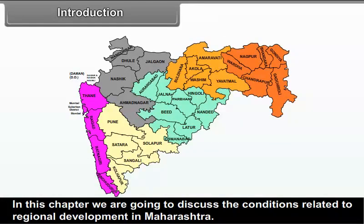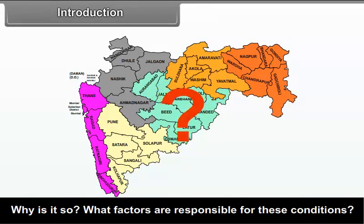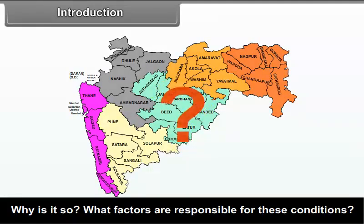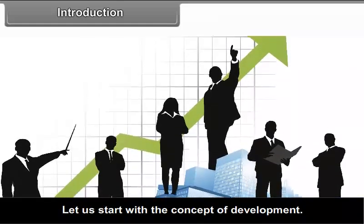In this chapter, we are going to discuss the conditions related to regional development in Maharashtra. We shall be taking up issues like what is the status of development in different parts of the state, why is it so, and what factors are responsible for these conditions. Before that, it is necessary to understand various concepts related to development. Let us start with the concept of development.